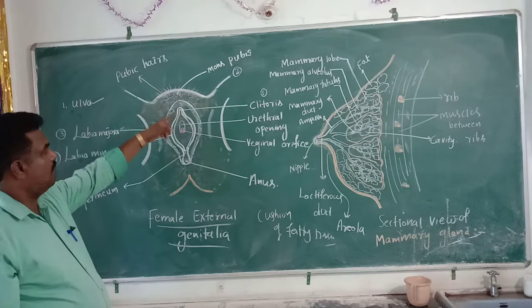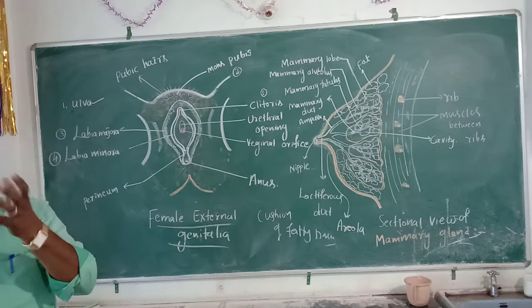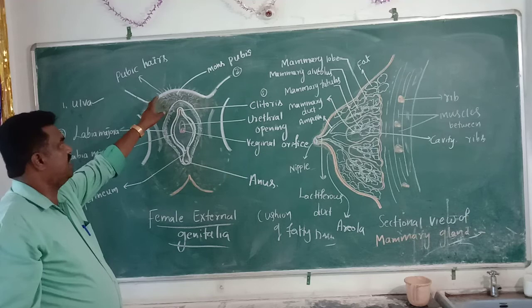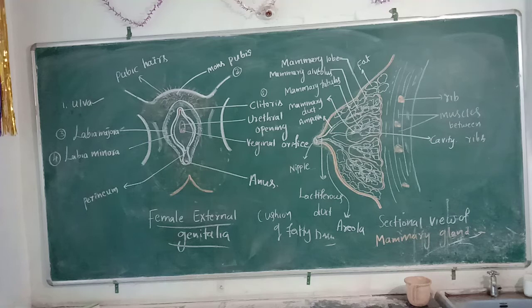Mons pubis is a cushion of fatty tissue which is covered in skin and where the pubic hairs are present. The main function of these pubic hairs is that they prevent the loss of heat from the vaginal cavity — heat conservation.